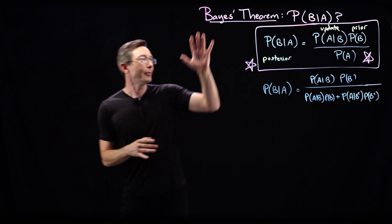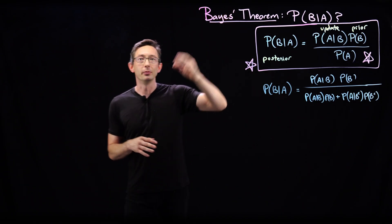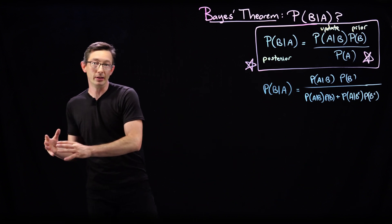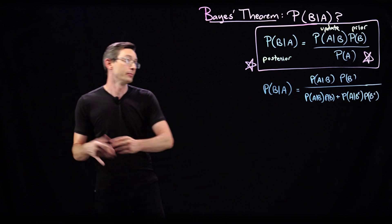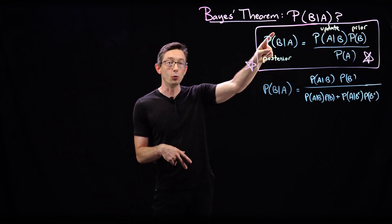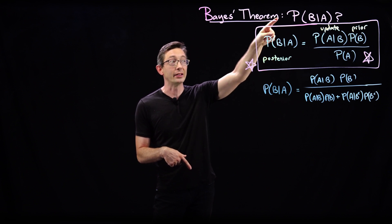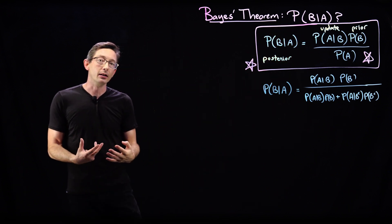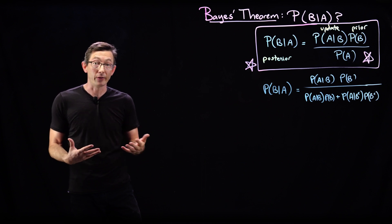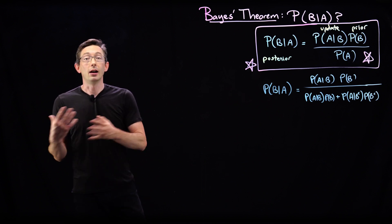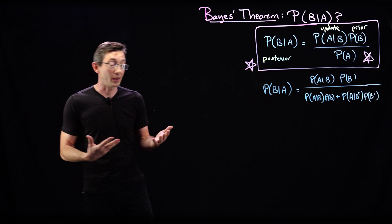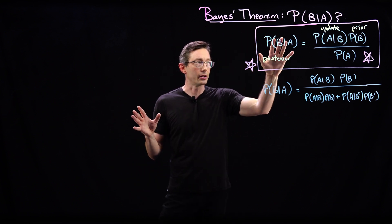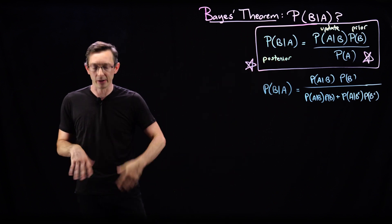Welcome back. We're talking about Bayes' Theorem, which is one of the most useful ways of computing inverse probabilities or solving for inverse problems — estimating something you want to know that's hard to measure from something you do know that's easy to measure. We gave an example of screening for a disease like cancer using some kind of test, and I want to give you one more example because I think this is such an important theorem.